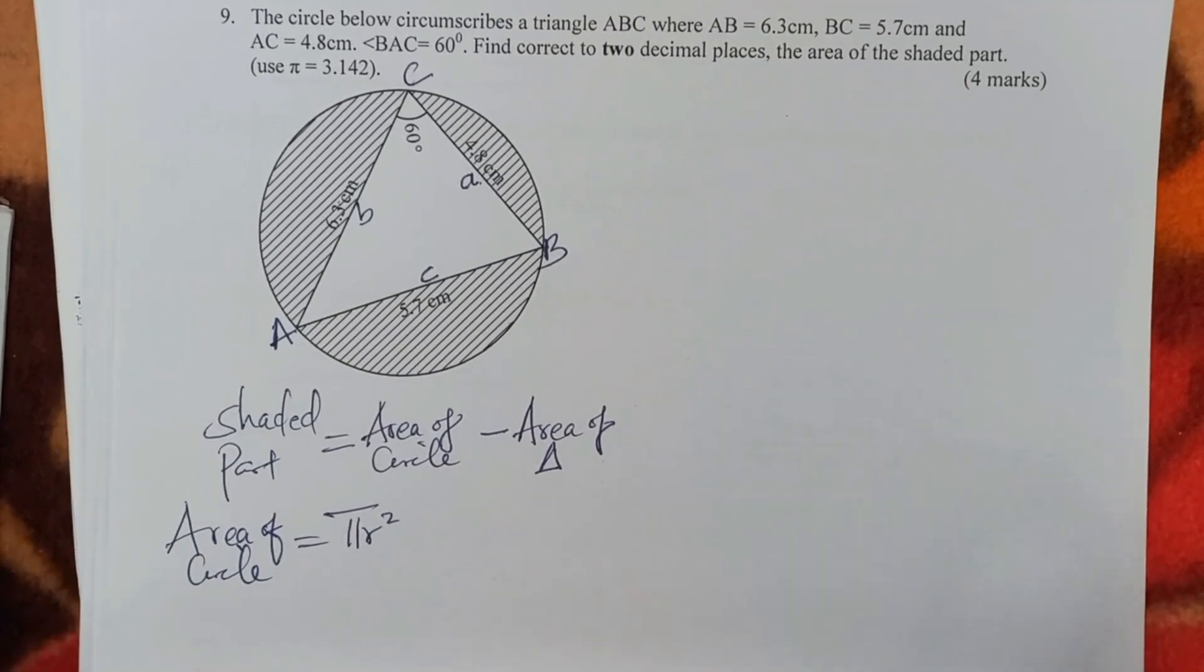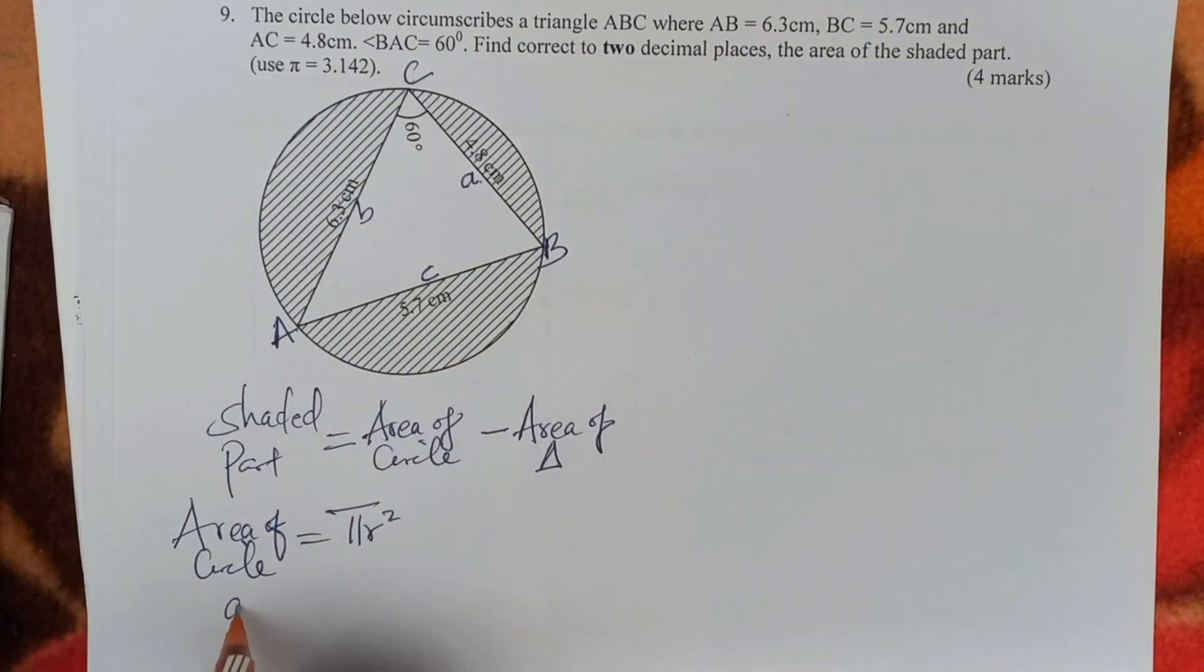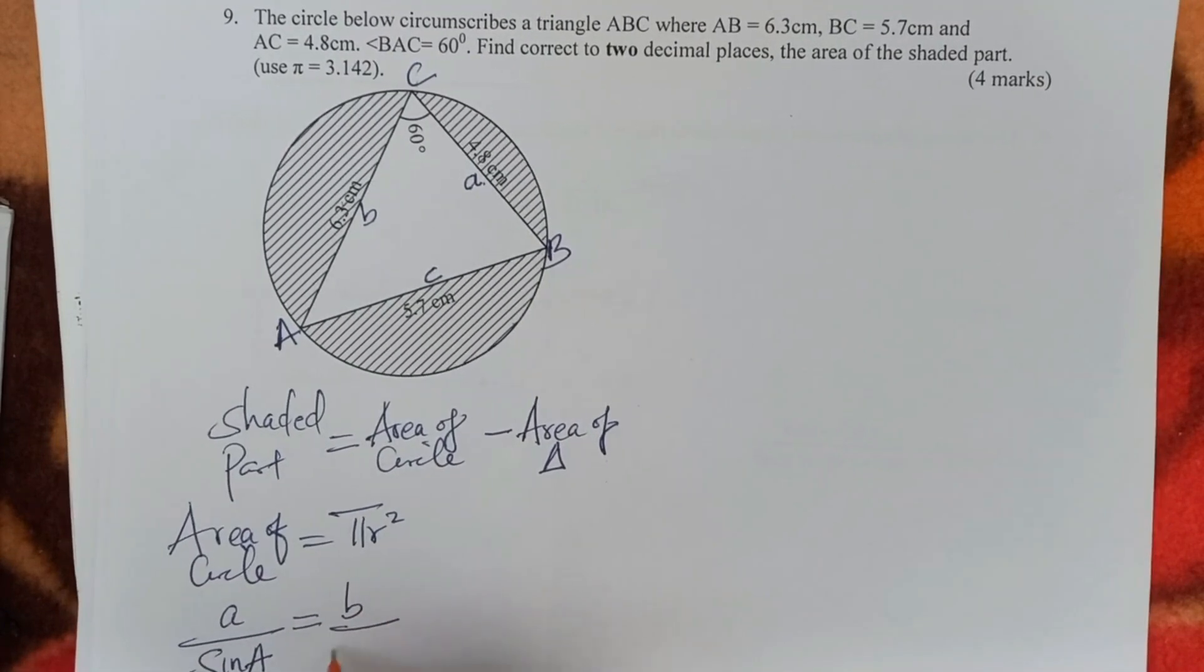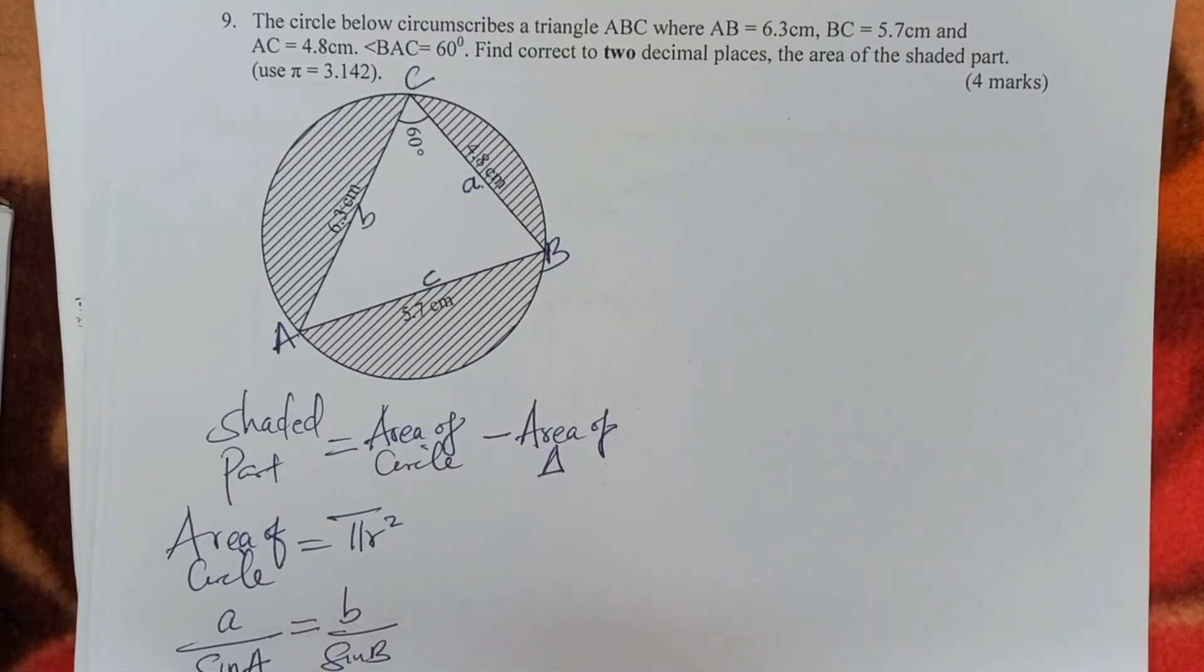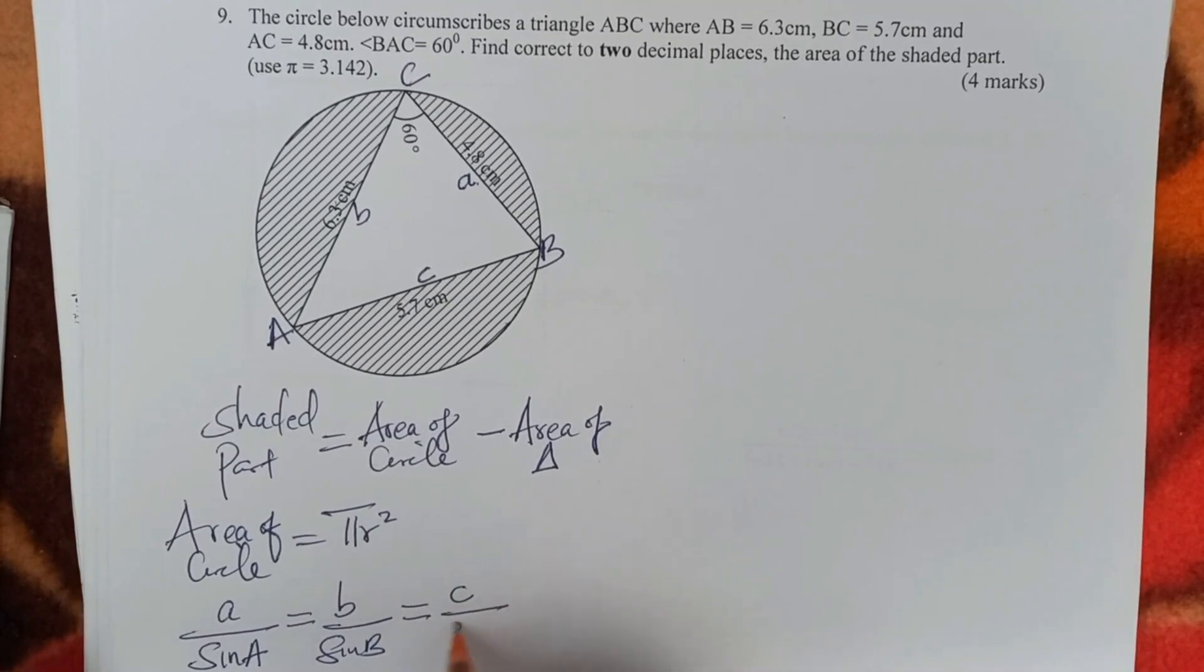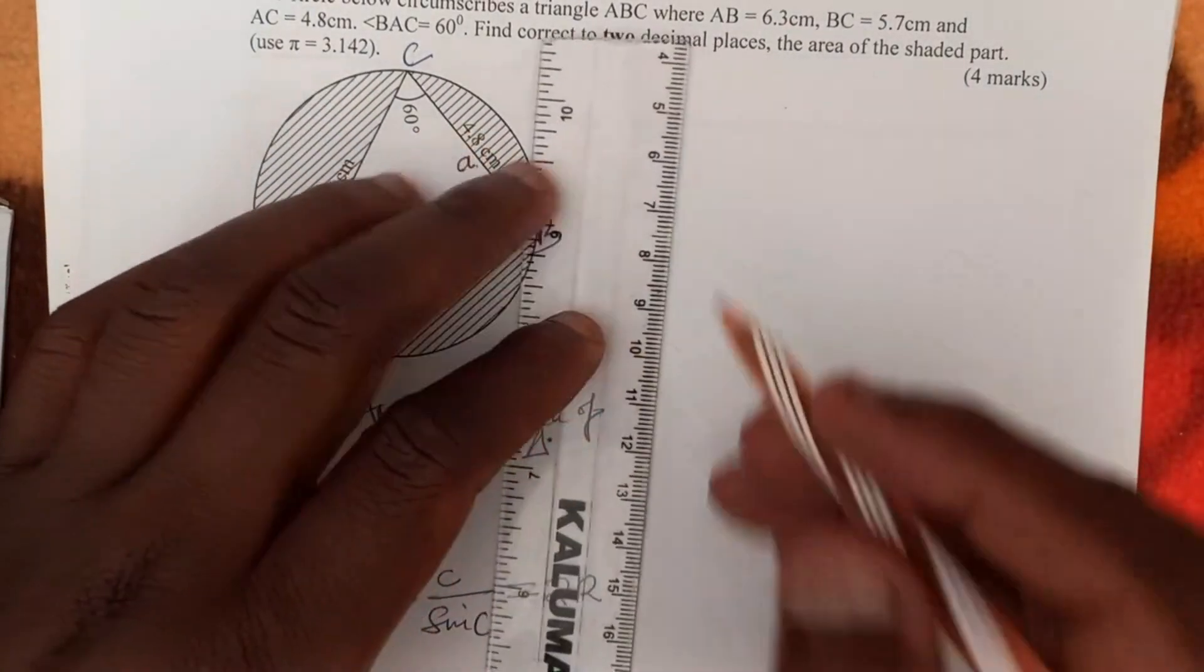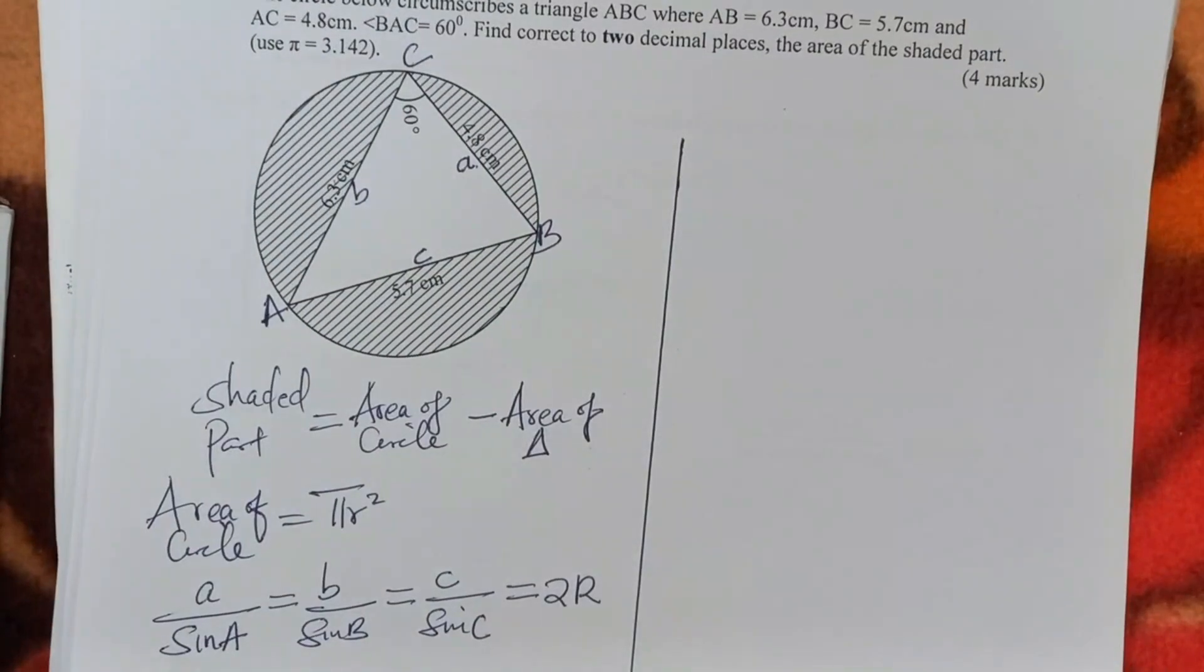Remember this, the sine rule. Using what we have here, a over sine of angle A equals b over sine of angle B equals c over sine of angle C equals 2R. This is what is going to help us to get the radius, the sine rule.